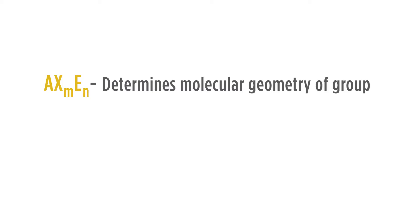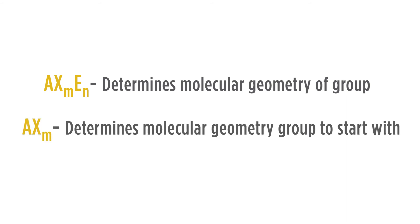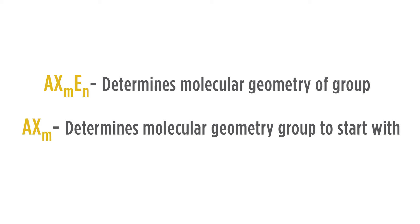We can use this AXE to determine the molecular geometry of our groups. We can use the AXm to determine the molecular geometry group that we'll start with. Five, use the AXE to predict the deviations from ideal bond angles based on the lone pair-lone pair interaction, lone pair-bonding pair, and bonding pair-bonding pair interactions. And finally, six, describe the molecular geometry.